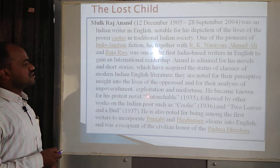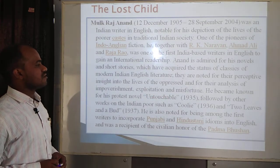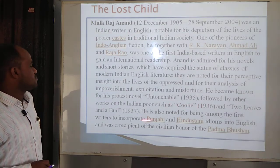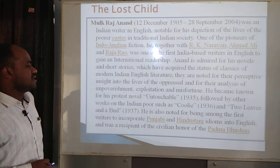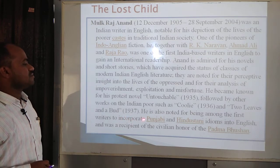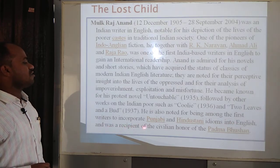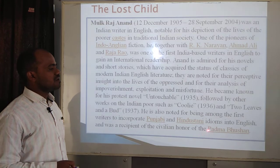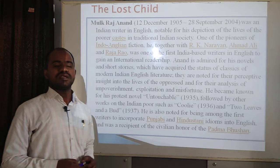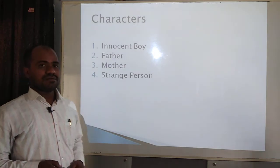His famous novel Untouchable was published in 1935, followed by other works on the Indian poor such as Coolie in 1936 and Two Leaves and a Bud in 1937. He is also noted for being among the first writers to incorporate Punjabi and Hindustani idioms in English, and he was a recipient of the civilian honour Padma Bhushan. This great writer Mulk Raj Anand wrote the story The Lost Child, which starts with four characters.